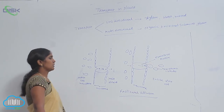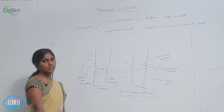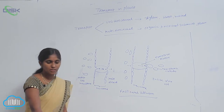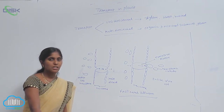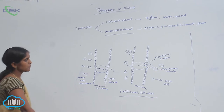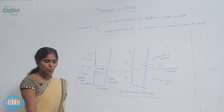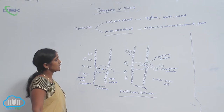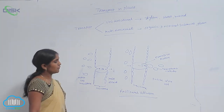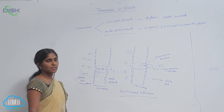Facilitated diffusion — the diffusion is facilitated by some special type of proteins. These special type of proteins help to move the substrate across the membrane. Such type of diffusion is called facilitated diffusion.